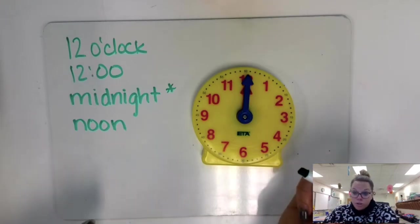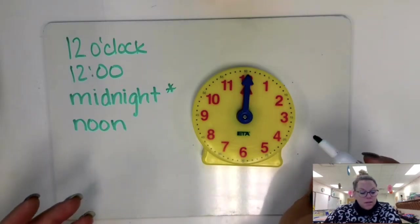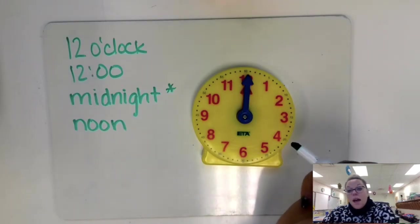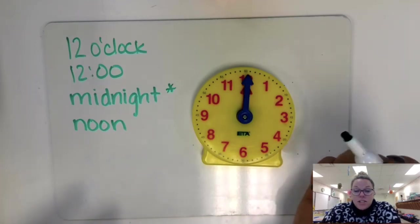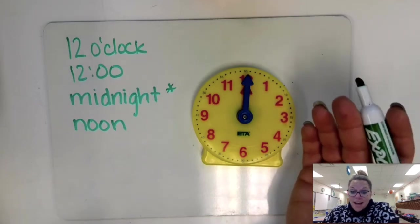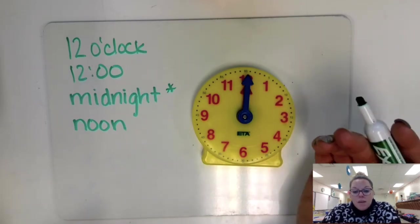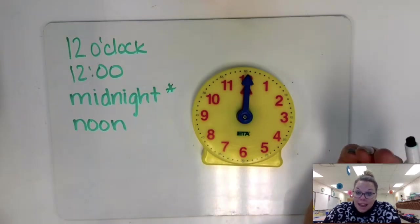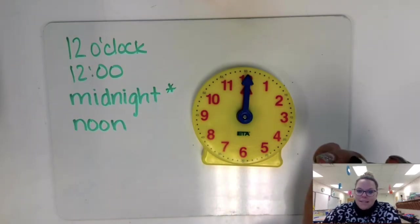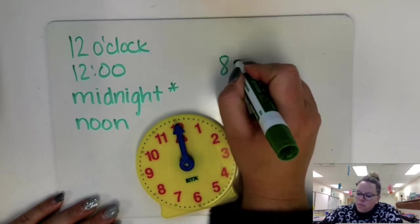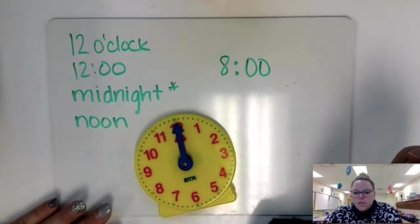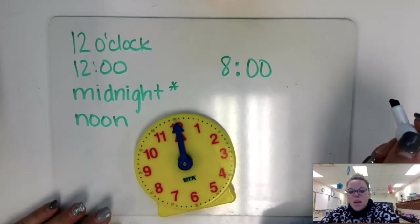Each day, there are two nine o'clocks. There's a nine o'clock in the morning and there's a nine o'clock at night. And we would come to school at eight o'clock, or hopefully earlier. School starts at eight o'clock.